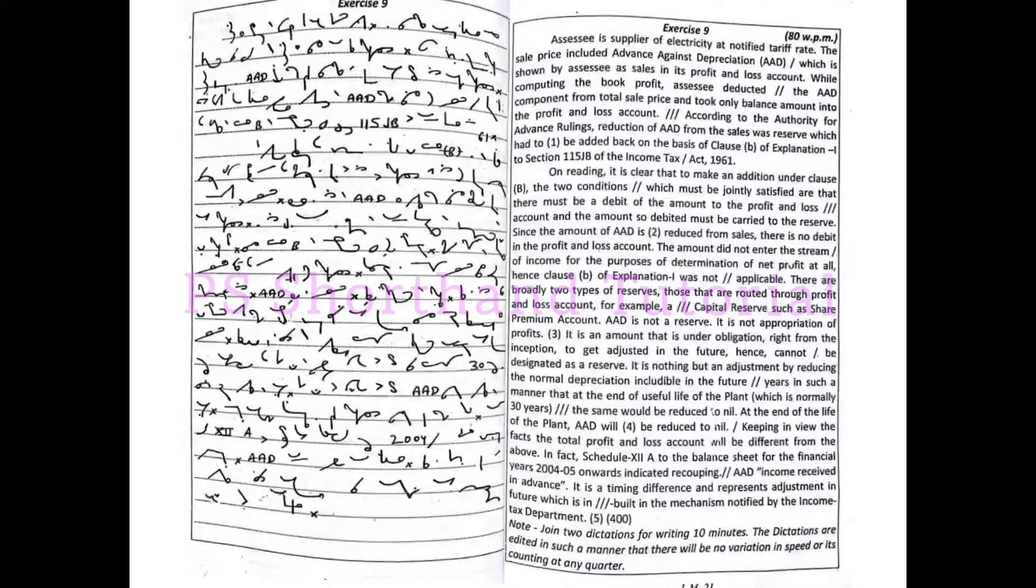On reading, it is clear that to make an addition under the clause, the two conditions which must be jointly satisfied are that there must be a debit of the amount to the profit and loss account.